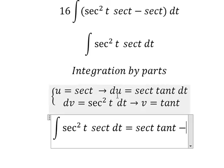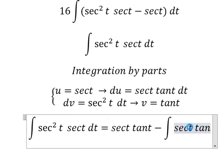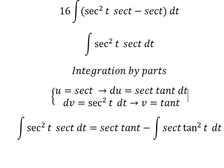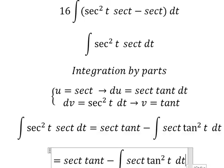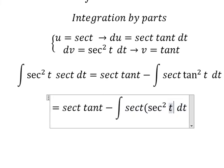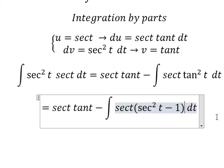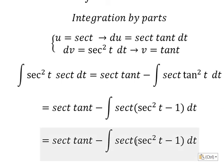Minus the integral of v du, which gives the integral of sec(t) tan²(t) dt. Now tan²(t) equals sec²(t) minus 1, so we expand to get sec(t) multiplied by sec²(t) minus 1.